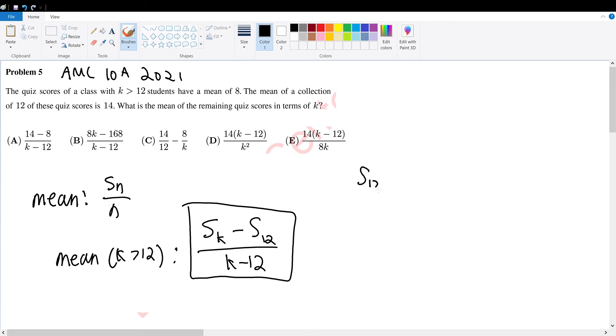So how do you find S of 12? Well, we can find this because we're given what mean of 12 is. The mean of the first 12 numbers is equal to 14, and we know the mean is equal to the sum of the numbers divided by the number of numbers, which is sum of 12 over 12. So S of 12 equal to 168. So if S of 12 is 168, we can substitute to get S of k minus 168 over k minus 12.